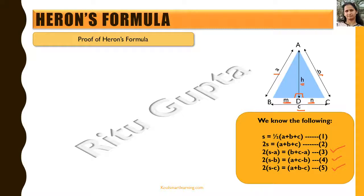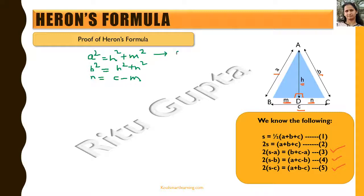Taking right triangle ABD, we can say A² = H² + M² by the Pythagorean theorem. And in right triangle ACD, B² = H² + N². We also know that N = C - M. Let's number these as equations 6, 7, and 8 respectively.